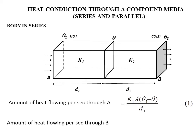Heat flowing through B will be equal to K2 times A times (theta minus theta 2) divided by D2. Here A is the area of cross-section of both materials, and we consider the area of cross-section of both materials to be the same.